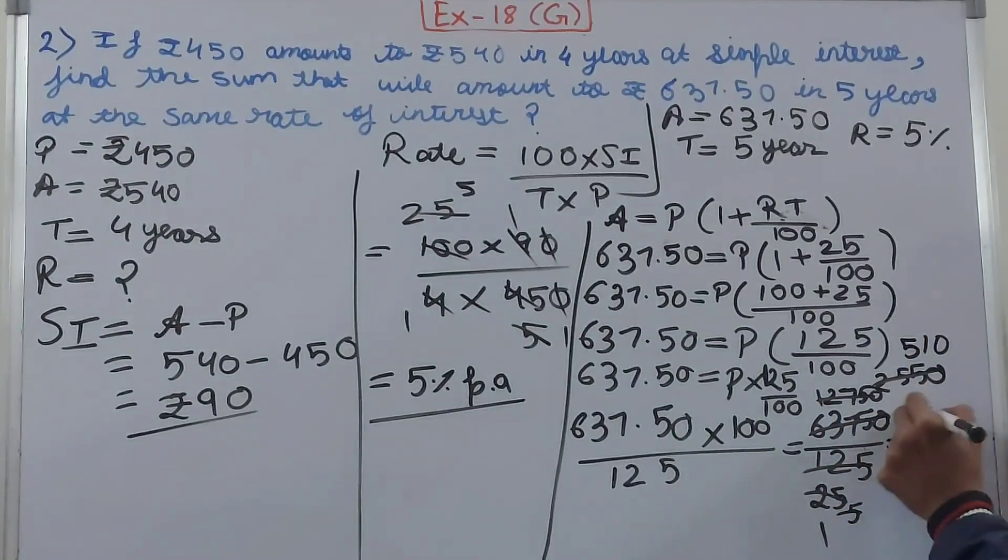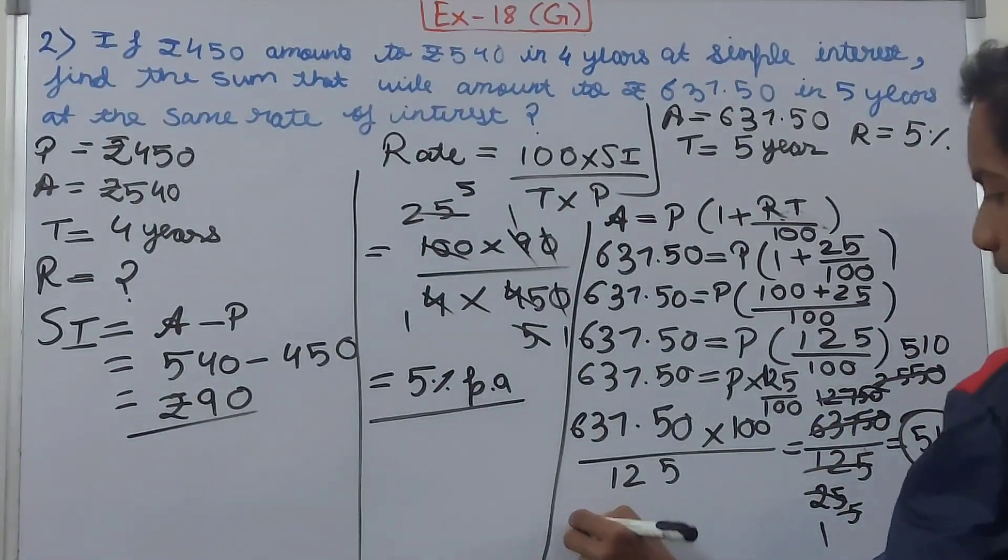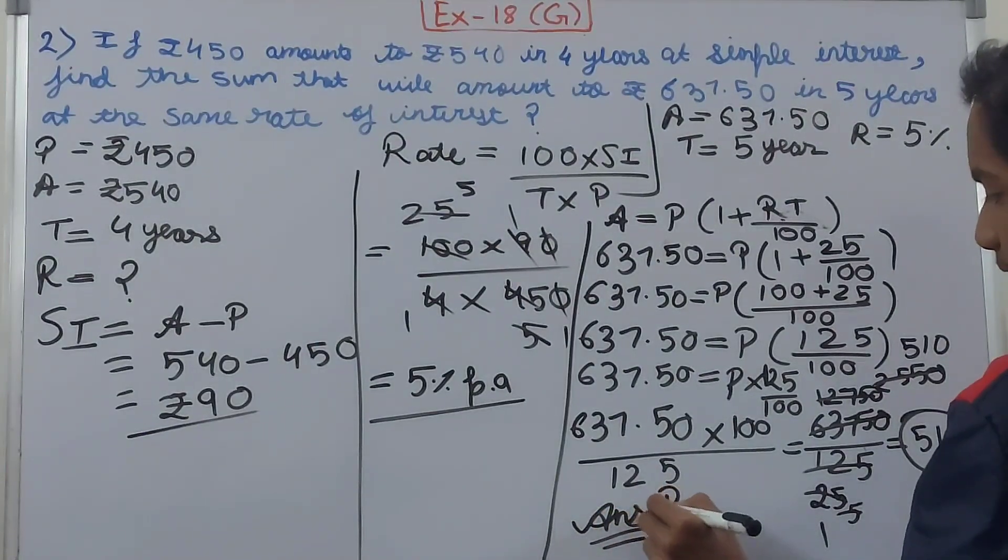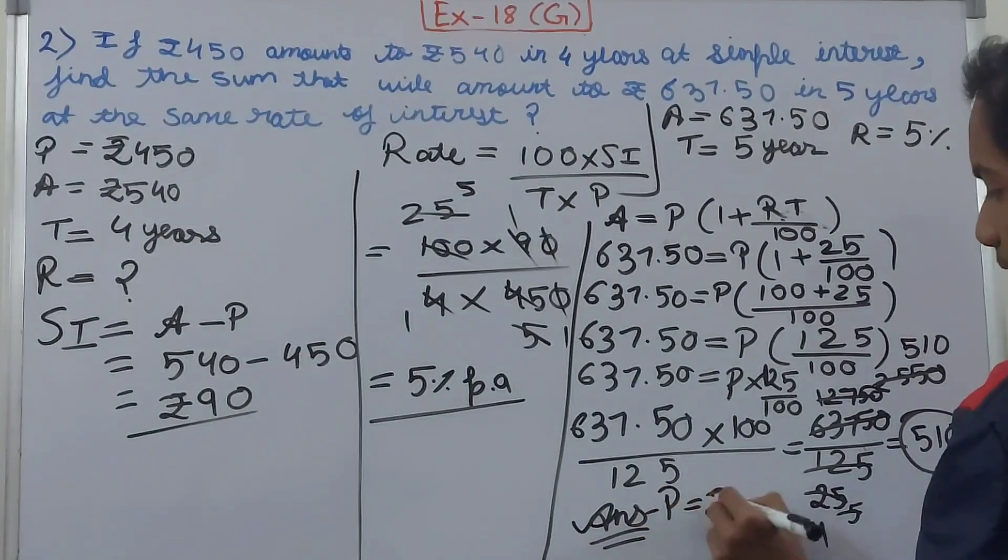I don't have space here, but our answer becomes what? That the principle or the sum equals to ₹510. This is what we get at the last. This becomes our final answer.